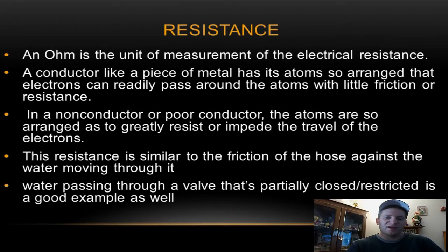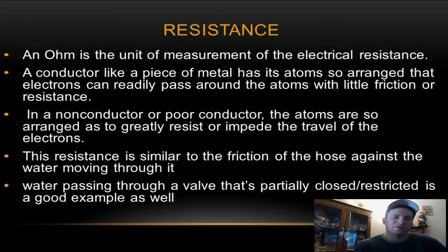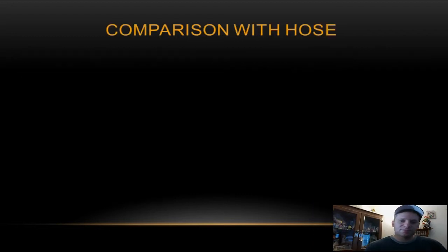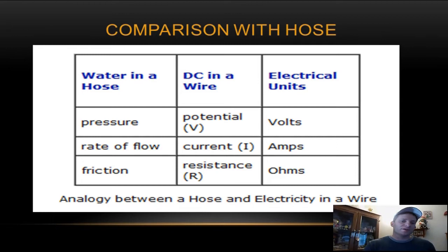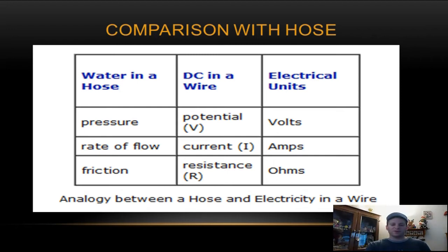A non-conductor or poor conductor has atoms arranged to greatly resist or impede the travel of the electrons. This resistance is similar to the friction of the hose against the water moving through it. Water passing through a partially closed valve is a good example — it restricts the flow of current. If you dump water from a bucket there's very little restriction, but if you put it through a hose, there is a restriction. If you compare water to a DC circuit: pressure compares to voltage (measured in volts), rate of water flow compares to current (measured in amps), and friction like a partially closed valve or kinked hose compares to resistance (measured in ohms).